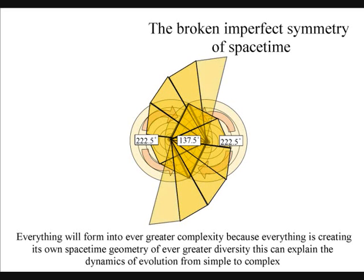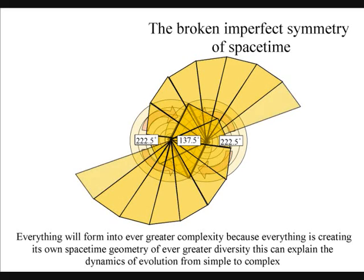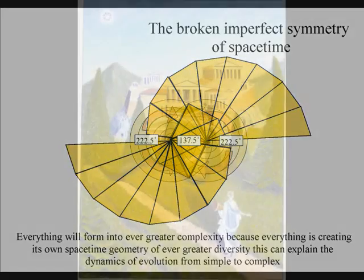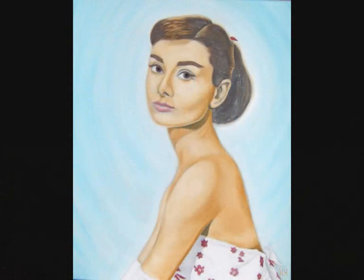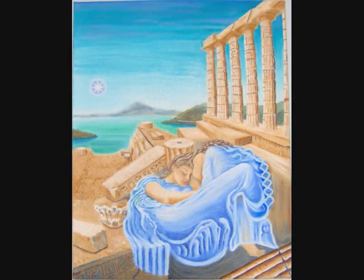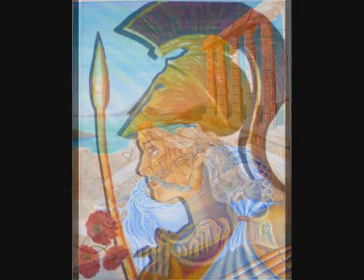The infinity of space-time is creating unlimited possibilities, and everything with a non-zero probability will form its own space-time geometry of ever greater complexity. But because there are only a limited number of elements, everything will reform in cycles.